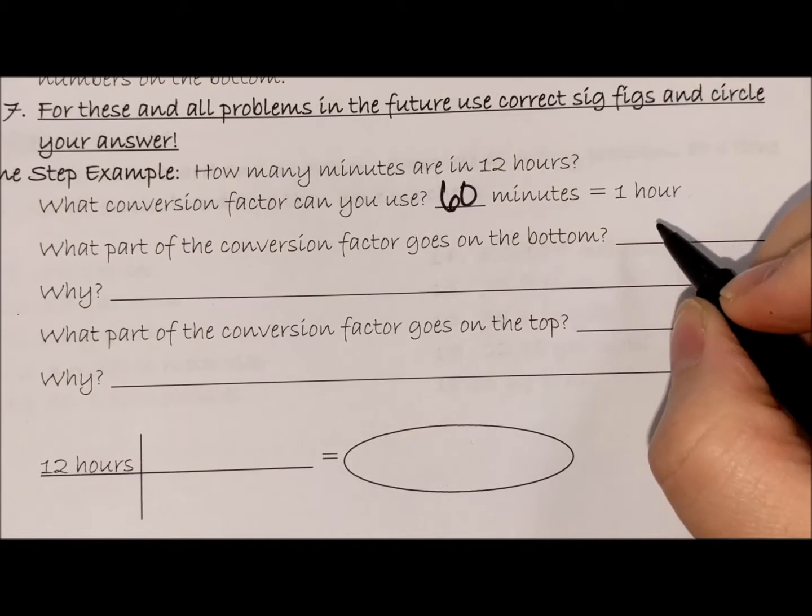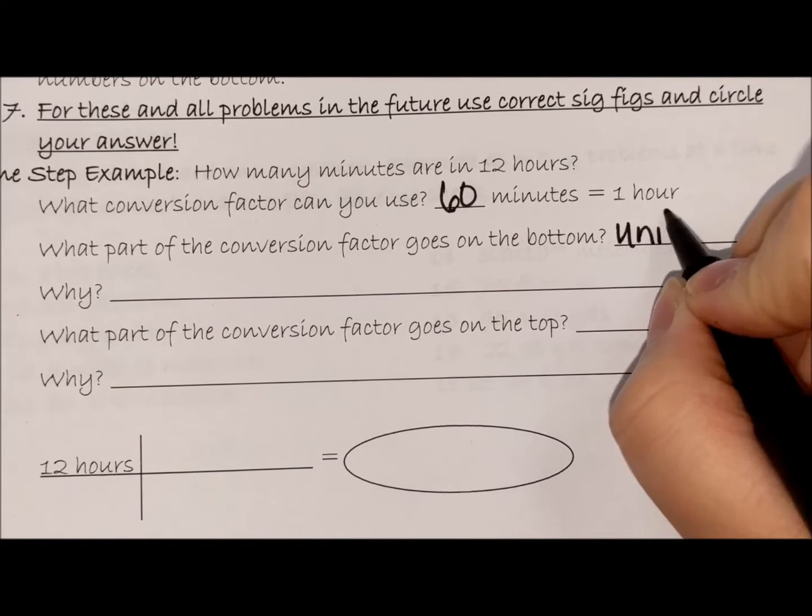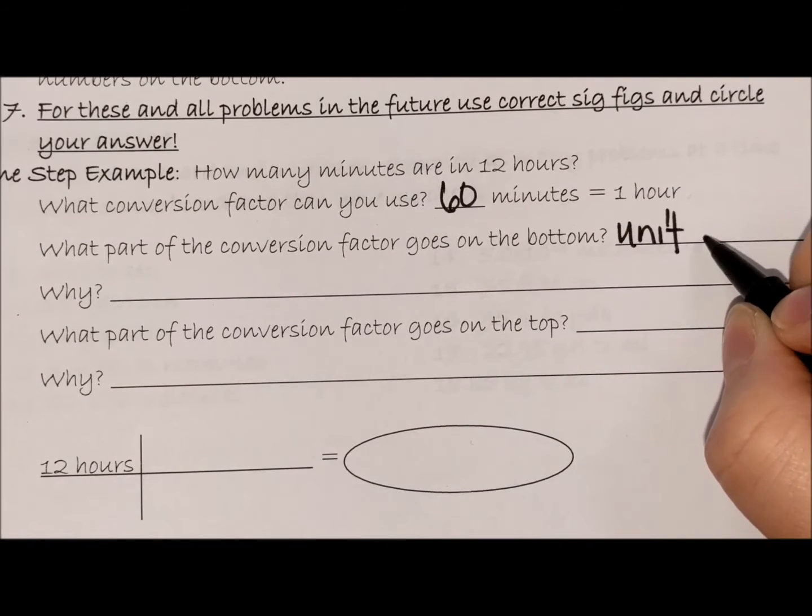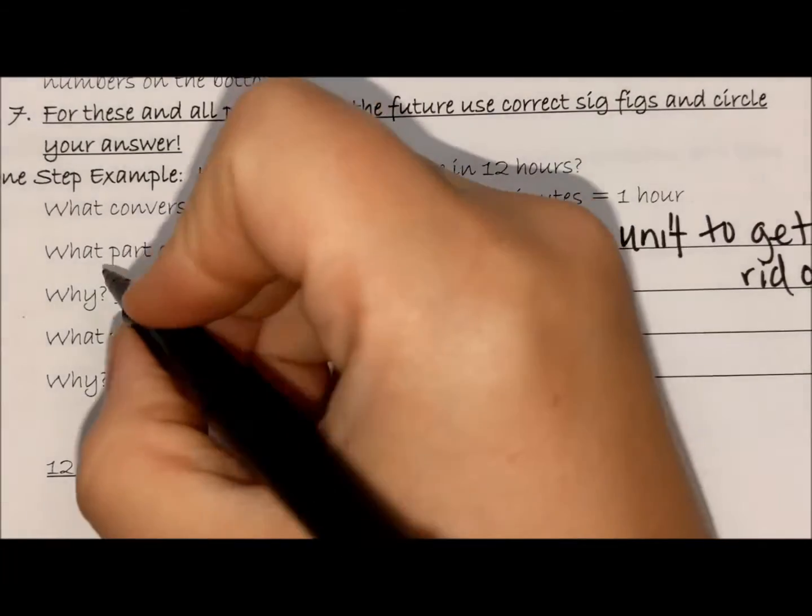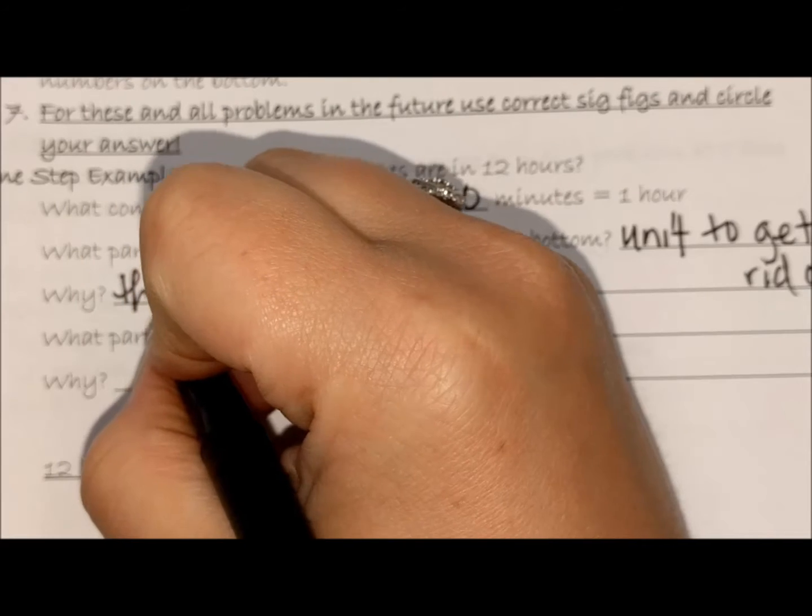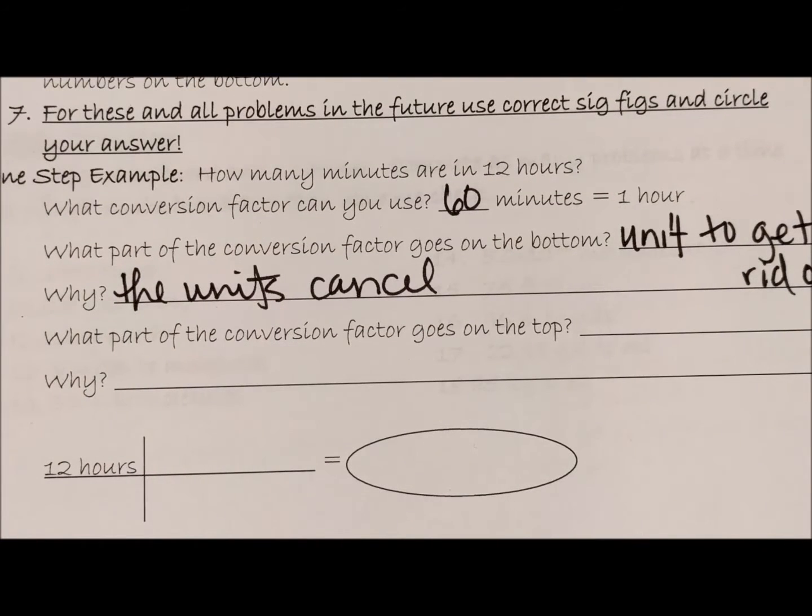So then the question is: what part of the conversion factor goes on the bottom? On the bottom, you are going to put the unit you're trying to get rid of, and the reason why is so that the units cancel.